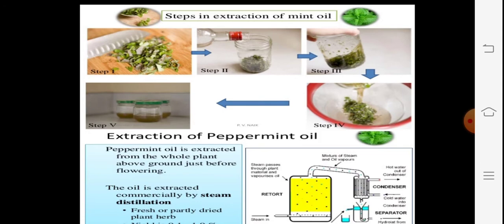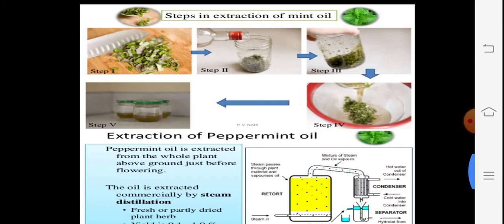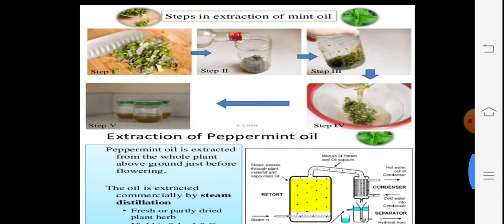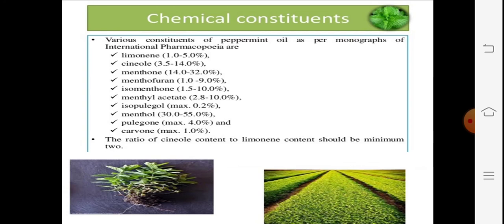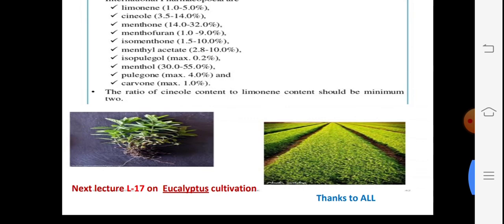The simplified process steps are: first, collection and cutting of the herb; then crushing; then feeding into the boiler for distillation. The main chemical constituents of peppermint oil include limonene, cineol, menthane, menthofurone, and menthol acetate. The ratio of cineol content to limonene content should be a minimum of two. In the next lecture, we will cover Eucalyptus globulus.